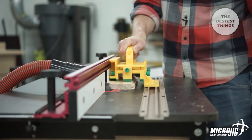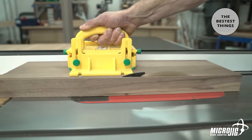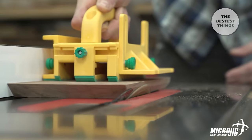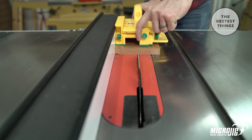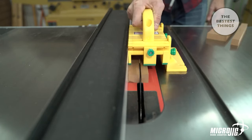No other push block delivers this level of safety and versatility. It gives you three directions of control to prevent kickback and protect your hands from spinning blades. The powerful green grip on its adjustable legs controls your workpiece on both sides of the blade, giving you clean, effortless cuts.